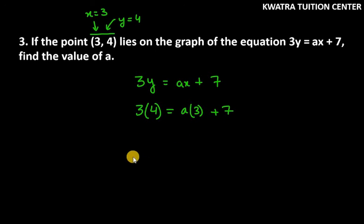We can easily get the value from here. We know 3 × 4 is 12, then we have 3 × a plus 7. Now, we will take 7 to the left-hand side because there are two numbers, simple numbers.